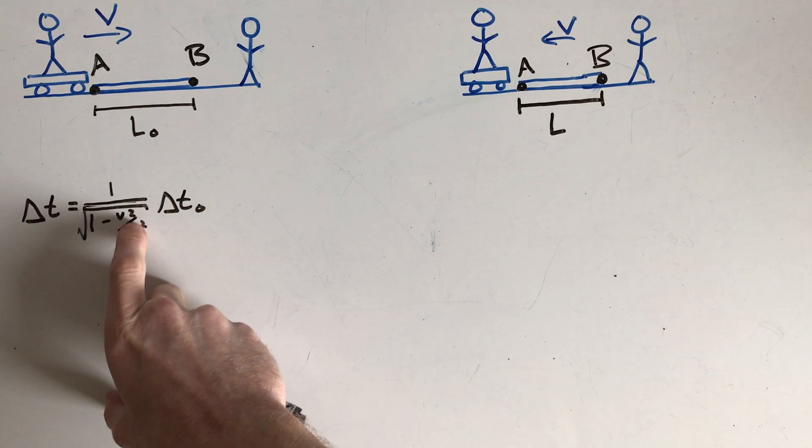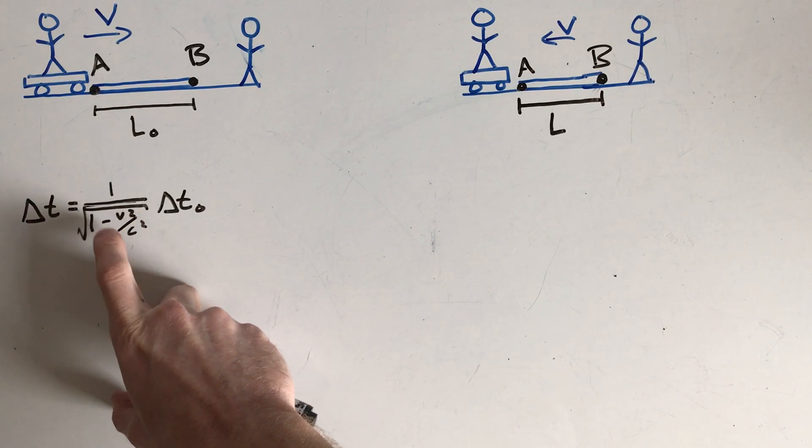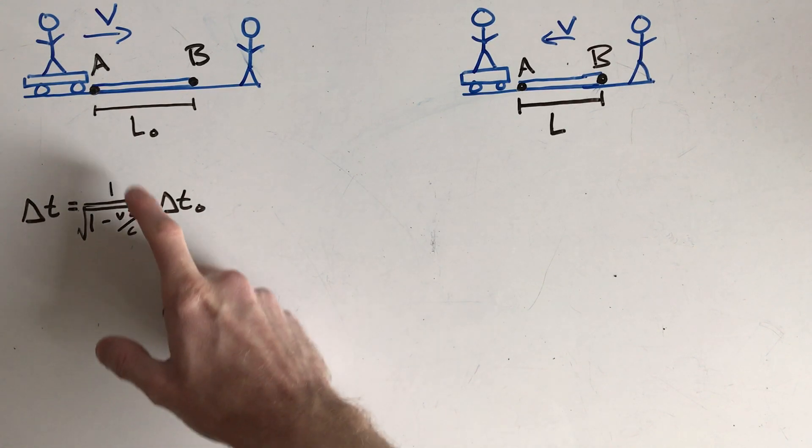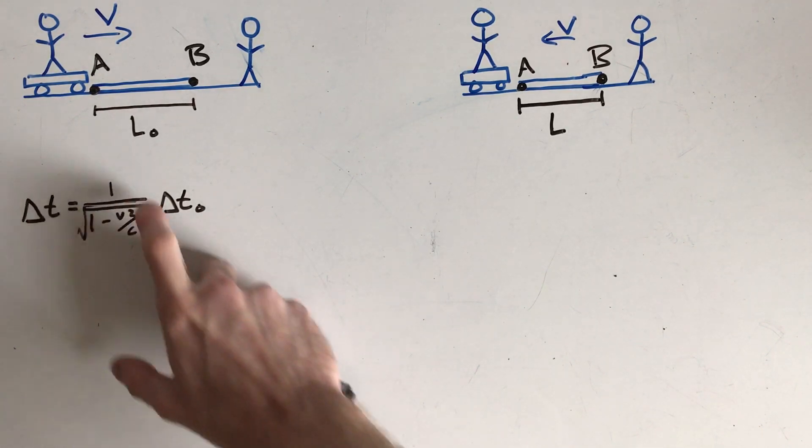The speed of two objects relative to each other will always be less than the speed of light. So this factor here, this fraction will always be less than 1, and 1 minus that will give you some number in the denominator here that's the square root of something less than 1, and 1 over that will always be something bigger than 1.